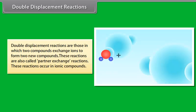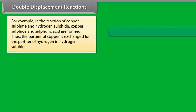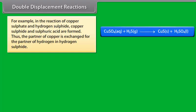Double displacement reactions are those in which two compounds exchange ions to form two new compounds. These reactions are also called partner exchange reactions. These reactions occur in ionic compounds. For example, in the reaction of copper sulfate and hydrogen sulfide, copper sulfite and sulfuric acid are formed.